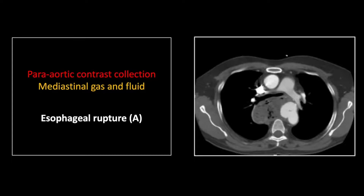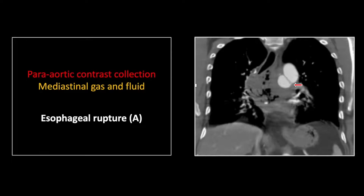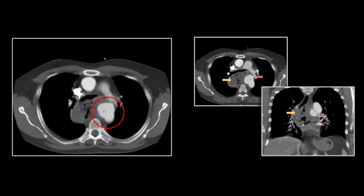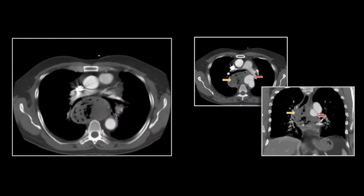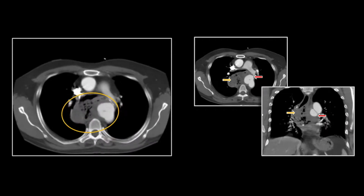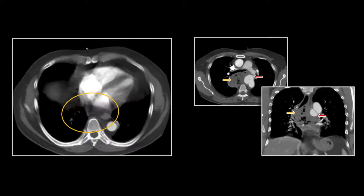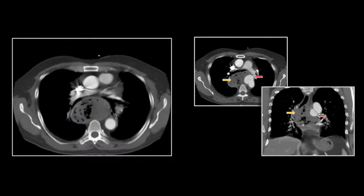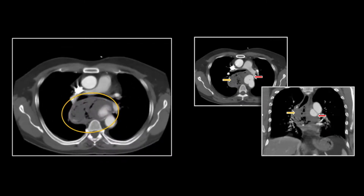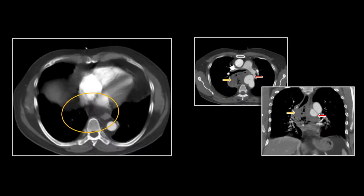So in traumatic esophageal ruptures, you will not always see extensive pneumomediastinum. The coronal helps you appreciate that — there is the pseudoaneurysm and the well-circumscribed collection of gas and fluid. You can see the esophagus superiorly entering it, then disappearing and exiting at the bottom.